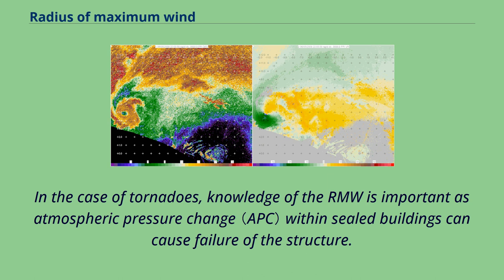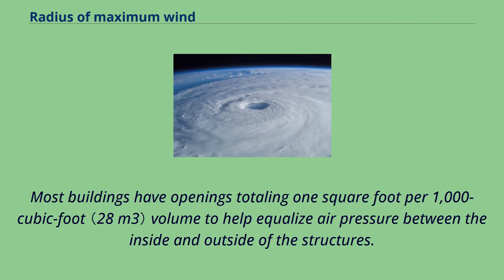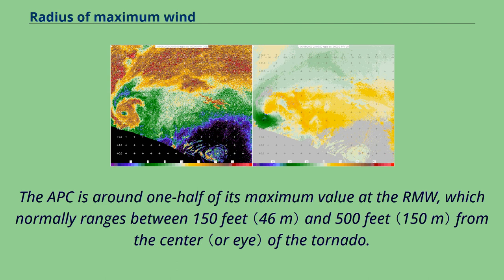In the case of tornadoes, knowledge of the RMW is important as atmospheric pressure change within sealed buildings can cause failure of the structure. Most buildings have openings totaling one square foot per 1,000 cubic foot volume to help equalize air pressure between the inside and outside. The atmospheric pressure change is around one half of its maximum value at the RMW, which normally ranges between 150 feet and 500 feet from the center of the tornado.